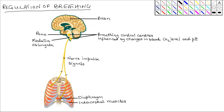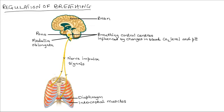Breathing is controlled by parts of the brain known as the pons and medulla oblongata. It is the concentration of carbon dioxide in the blood that determines the breathing rate. In other words, it is the level of carbon dioxide in the blood which influences these parts of the brain, which in turn influence the breathing rate.